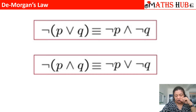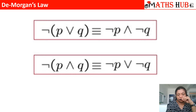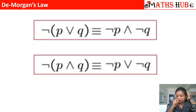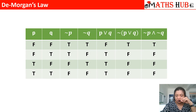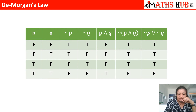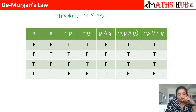The next law is De Morgan's law. De Morgan's law says that negation of (P OR Q) is equivalent to negation P AND negation Q — the negation opens up like a bracket, the OR becomes AND, and each term is negated. Similarly, the second sub-law says negation of (P AND Q) is equivalent to negation P OR negation Q. Both sub-laws can be verified with the help of truth tables.